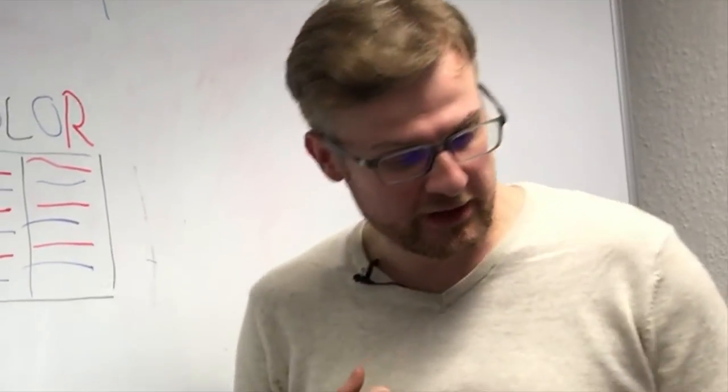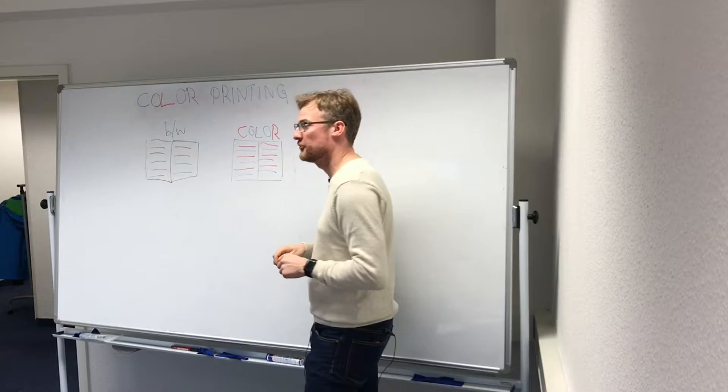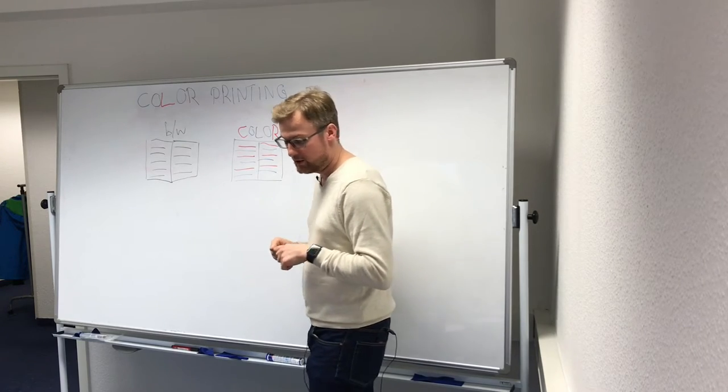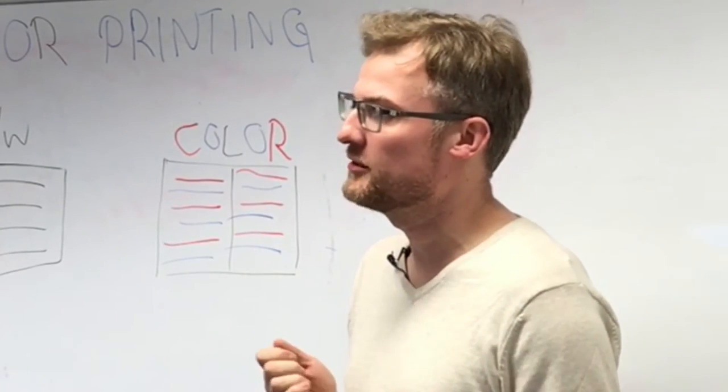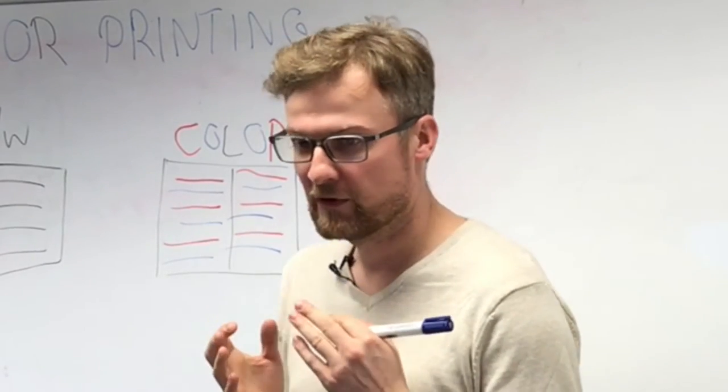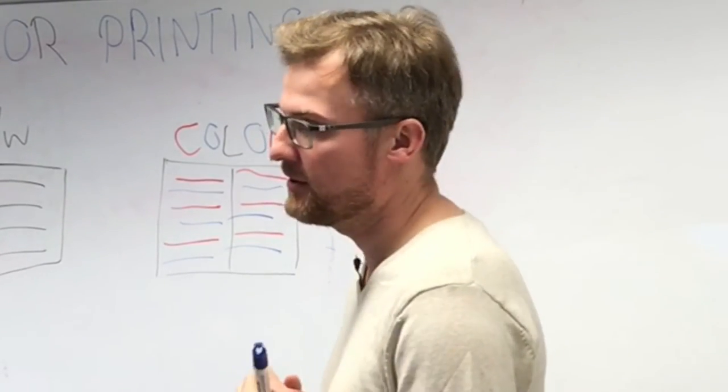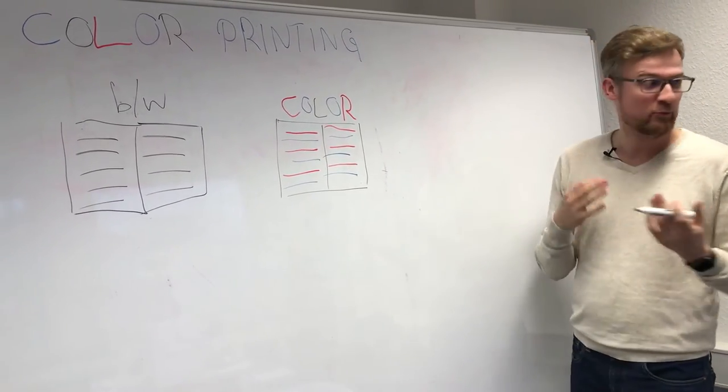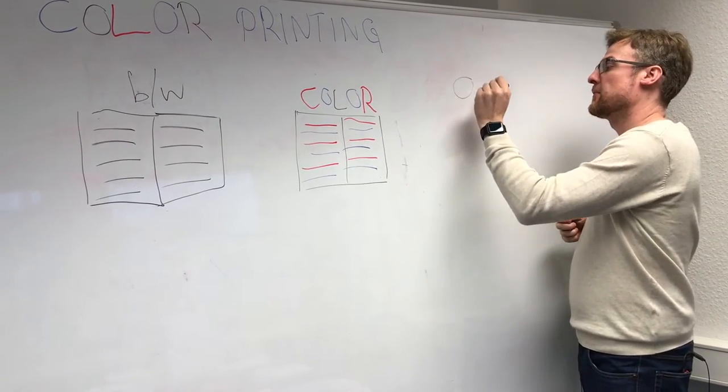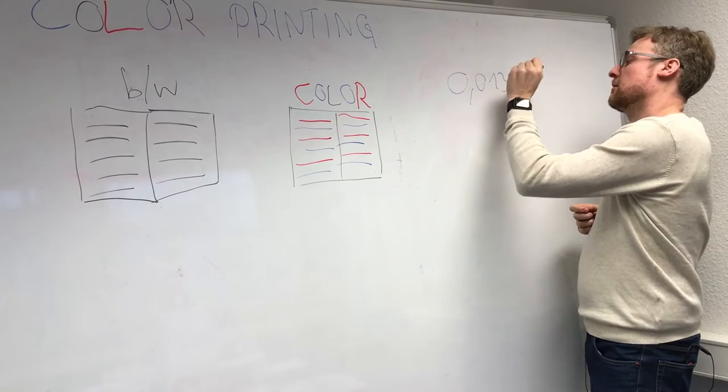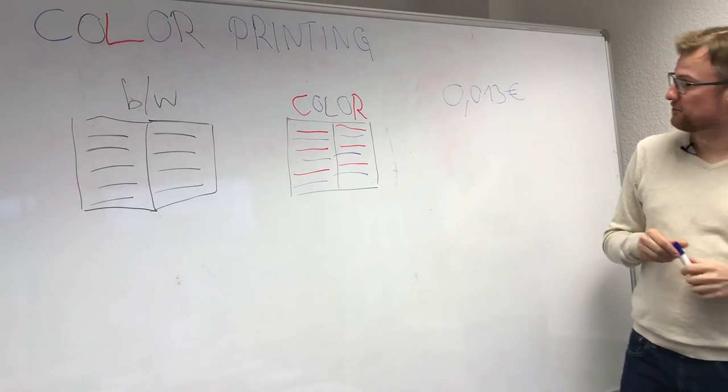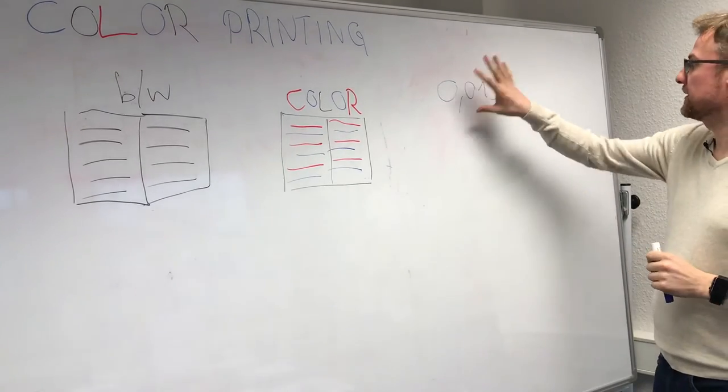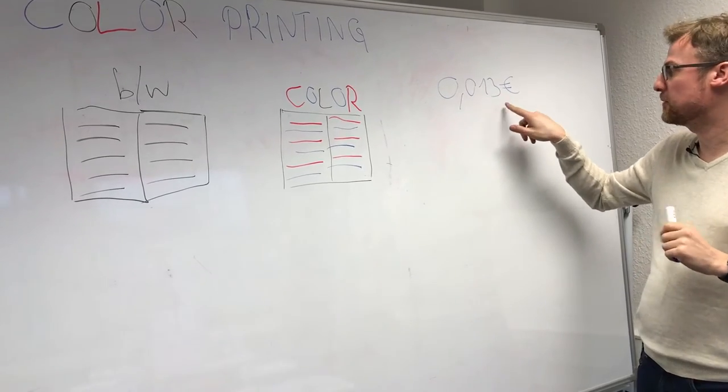So I need to give you a short production costs overview so you get a feeling what it actually means to print in color compared to print in black and white. Paper is cheap. It is, in fact, so cheap that you can totally neglect the paper price. The expensive thing for printing is the ink. And to give you a heads up on what average printing page price we have, this is a price for one page in black and white. And on top of that, if there are 400 pages, this is the price for one page.